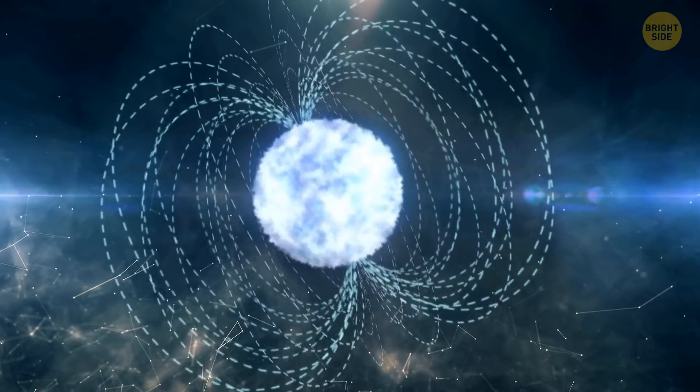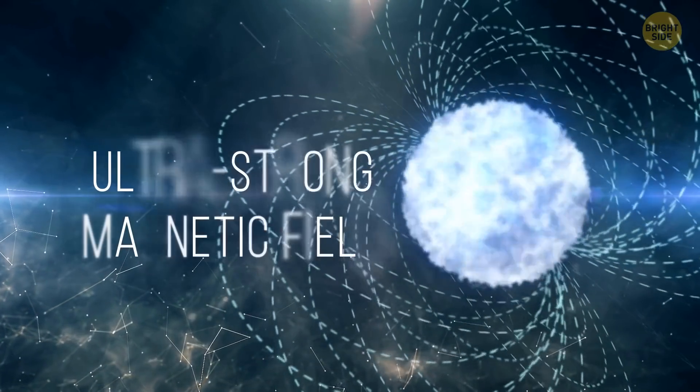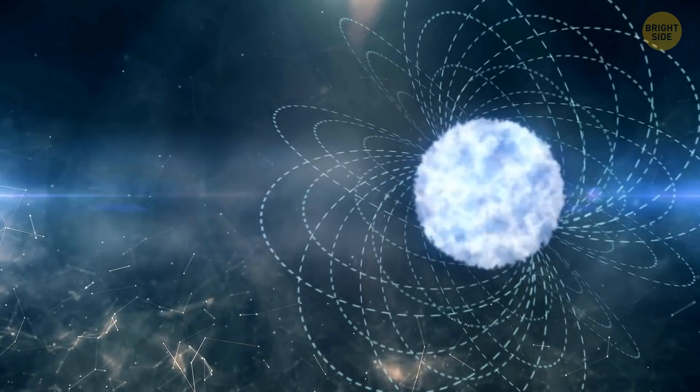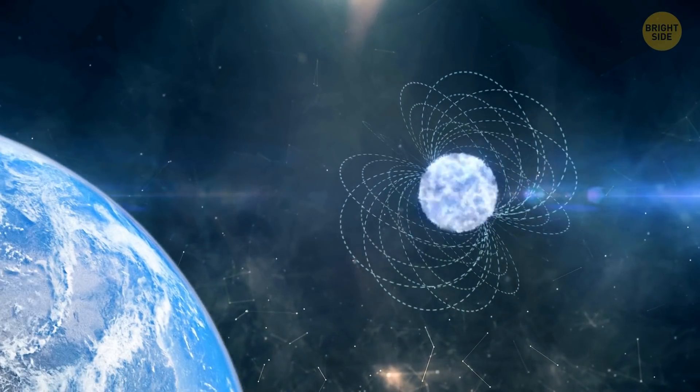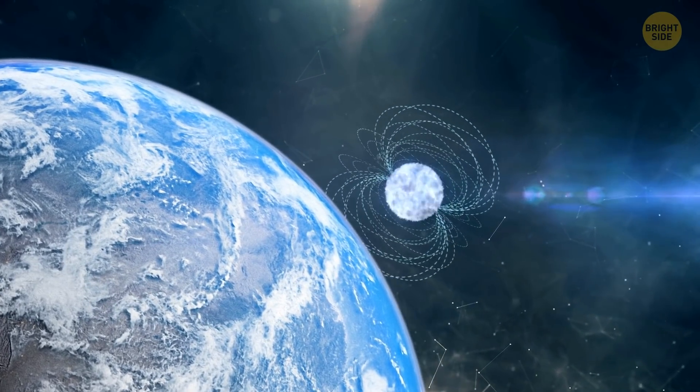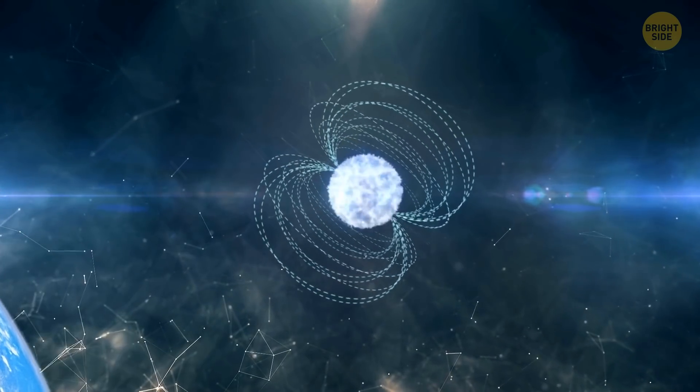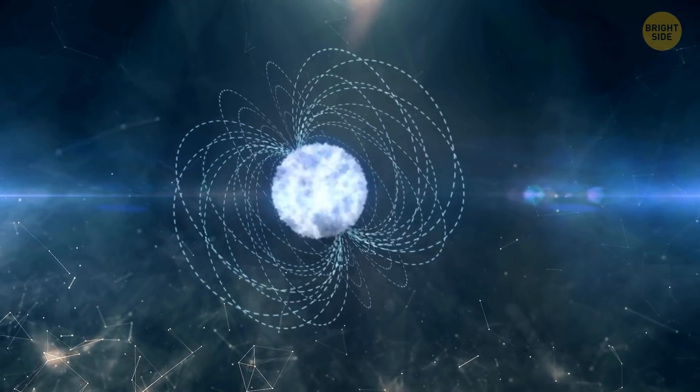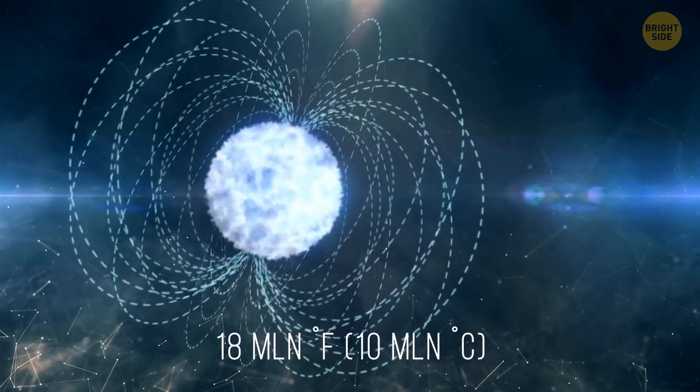That's an exotic form of a neutron star with an ultra-strong magnetic field. It's 1,000 trillion times stronger than our planets. This field is also so powerful, it heats the star's surface up to 18 million degrees Fahrenheit.